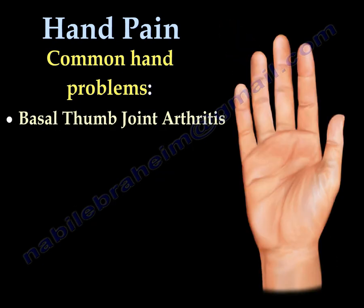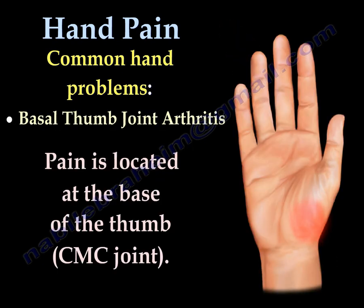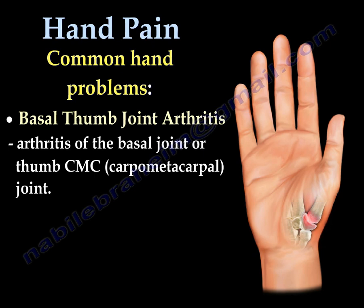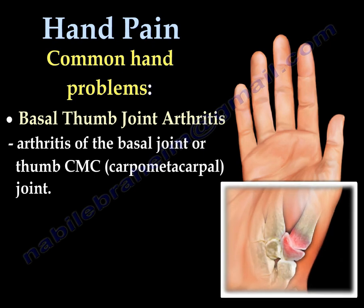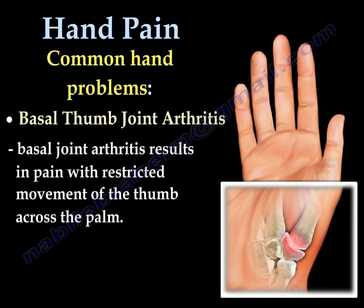Basilar thumb arthritis involves pain located at the base of the thumb at the CMC joint. This condition results in pain and restricted movement of the thumb across the palm, representing arthritis of the basilar joint of the thumb.